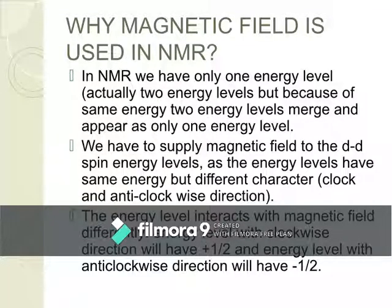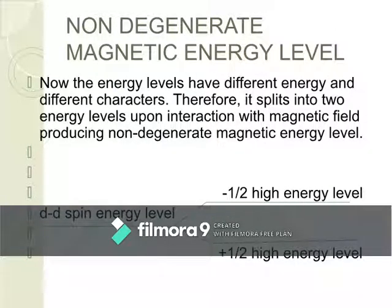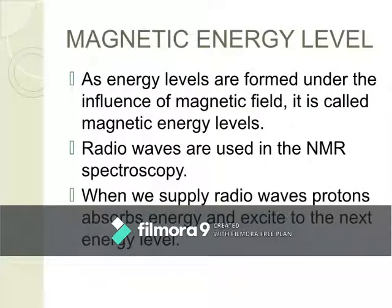Why is a magnetic field used in NMR spectroscopy? When the doubly degenerate spin energy level is arranged in one particular path, we cannot observe the spectrum. In order to split and observe the spectrum, we need a magnetic field. In the magnetic field, we use a Helmholtz coil to give enough energy to split it, which results in the splitting of the energy level into higher and lower energy levels. This is called the non-degenerate magnetic energy level, where the degenerate spin energy level is split into plus half and minus half levels.